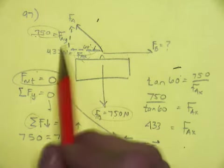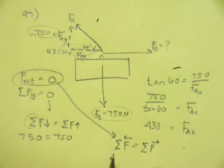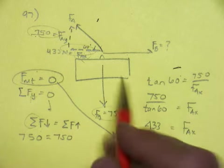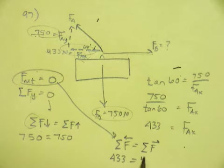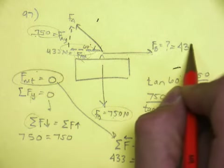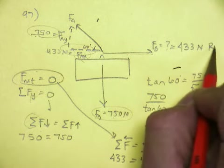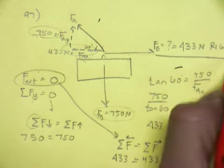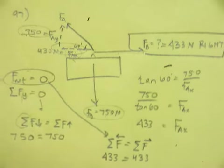So this cable pulls to the left at 433. That means that this cable has to pull to the right at 433. So force of B, 433 newtons to the right. Because it has to be.